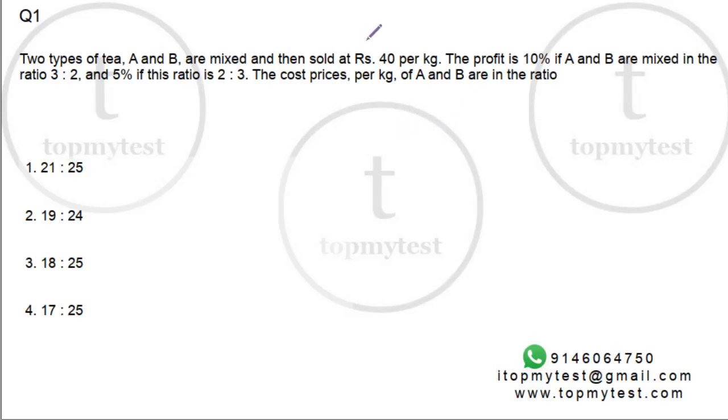Hi, there's a question from CAT 2018 Slot 1. This is on arithmetic. It basically has ratios and percentages, profit and loss, and mixtures. It's an easy to medium level difficulty question.